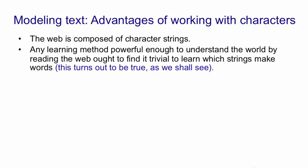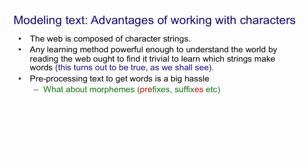So we're going to be very ambitious here. We want something that will read Wikipedia and understand the world. If we have to preprocess the text in Wikipedia into words, it's going to be a big hassle. There's all sorts of problems. The first problem is morphemes. The smallest units of meaning, according to linguists, are morphemes. So we're going to have to break up a word into these morphemes if we want to deal with it sensibly.